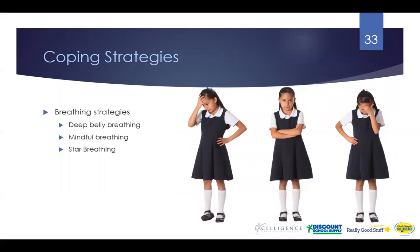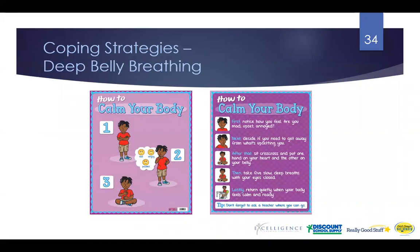Now let's do some coping strategies — specifically breathing strategies. One poster from Really Good Stuff has steps for younger and older kids. Here's how to calm your body: first, notice how you feel — are you mad, upset, annoyed? Next, decide if you need to get away from what's upsetting you. Then sit crisscross and put one hand on your heart and the other on your belly. Take five slow, deep breaths with your eyes closed. Lastly, return quietly when your body feels calm and ready. Going through these steps over and over will get your child used to deep belly breathing as a calming strategy.